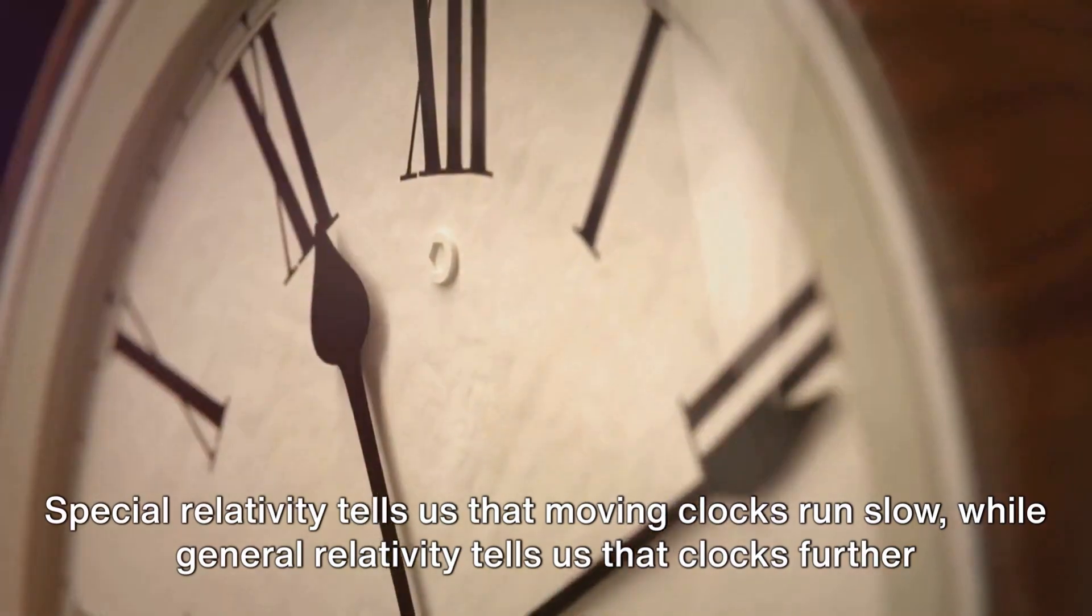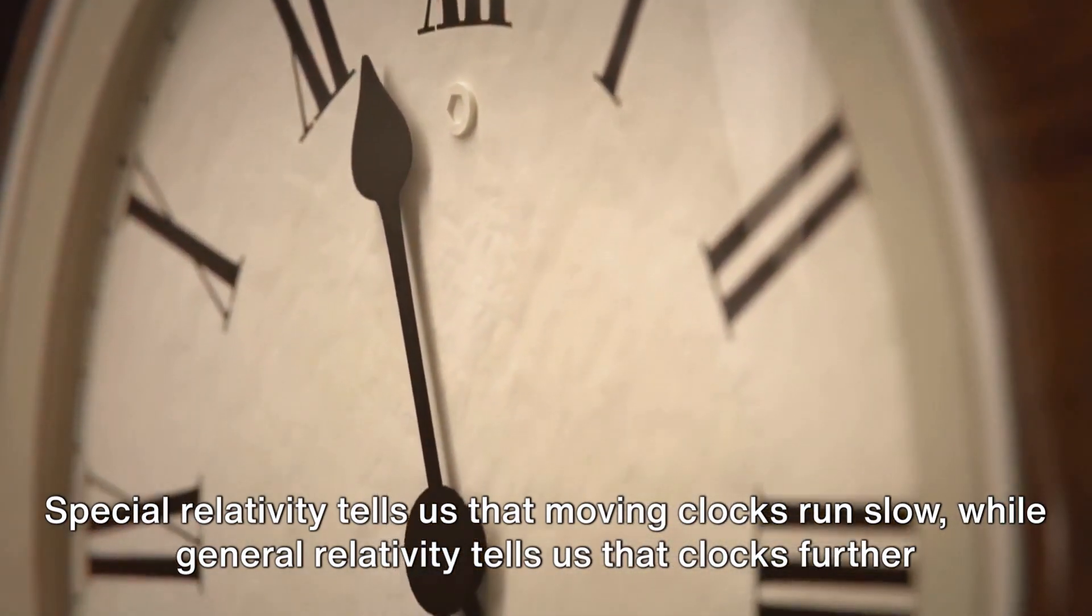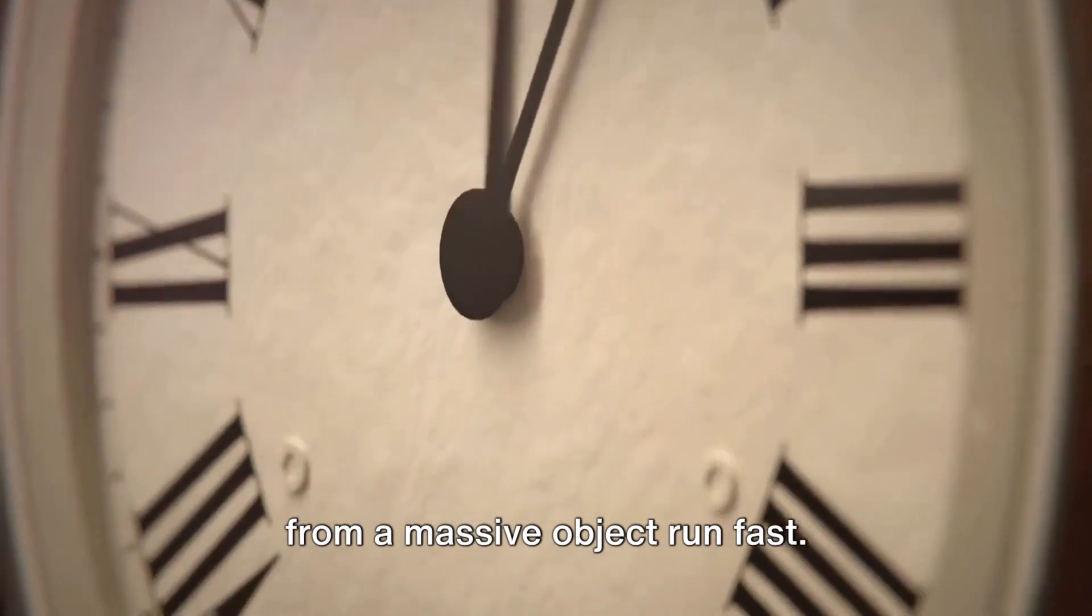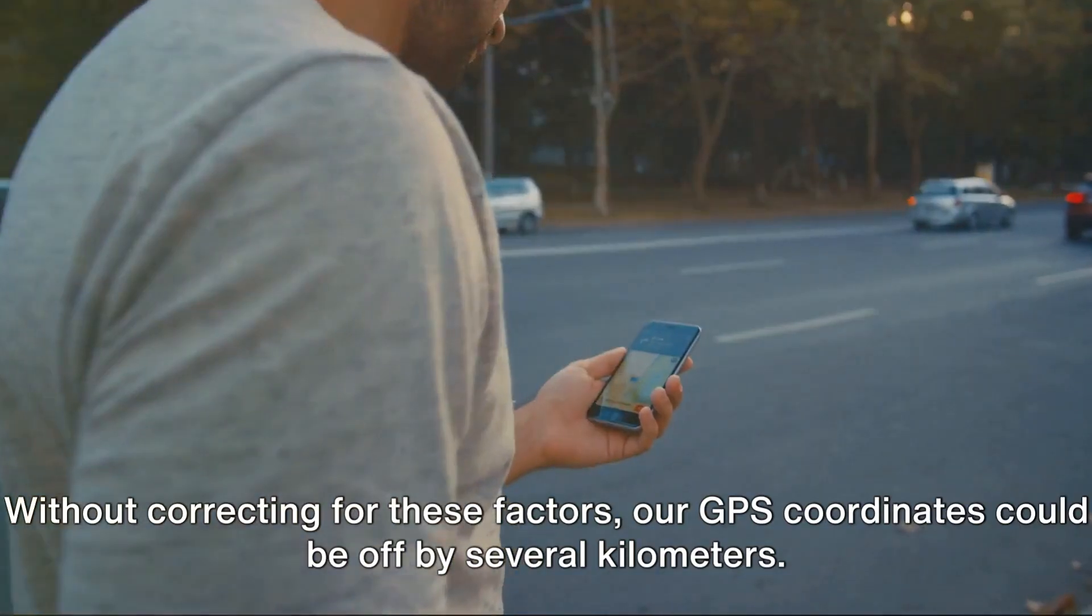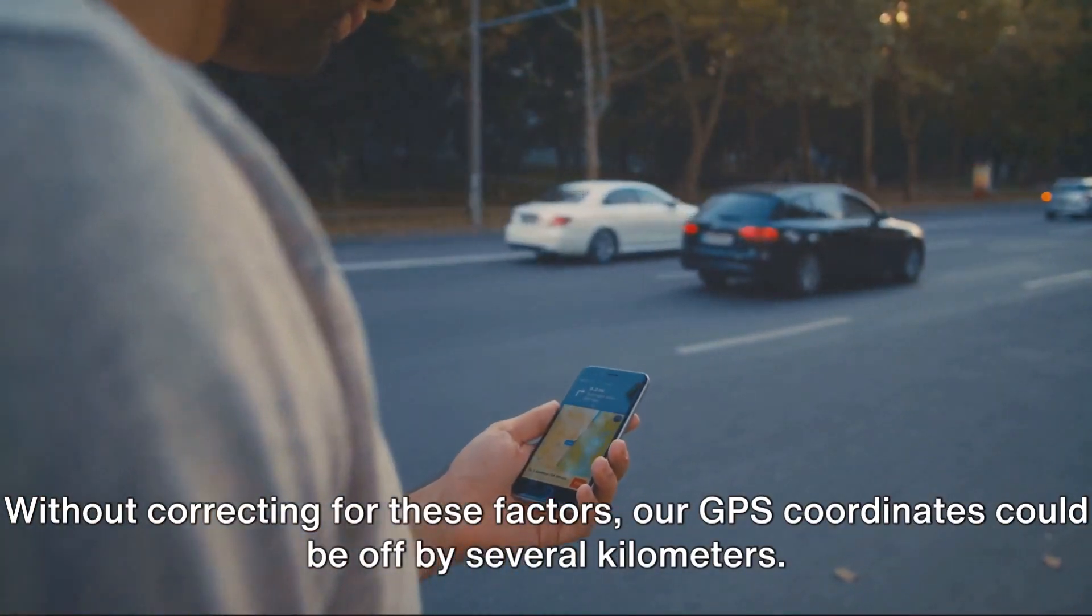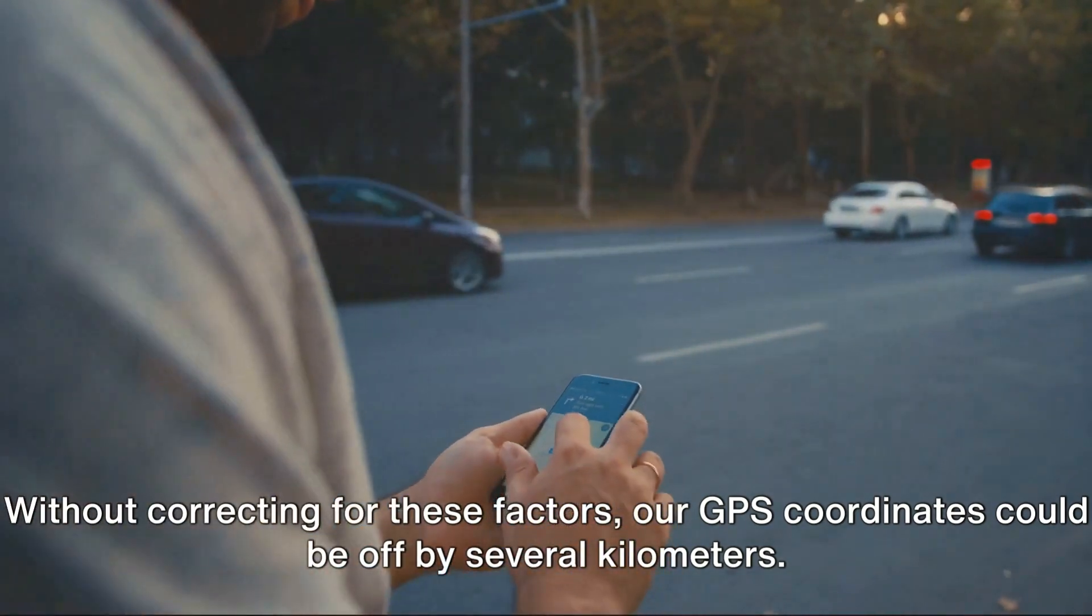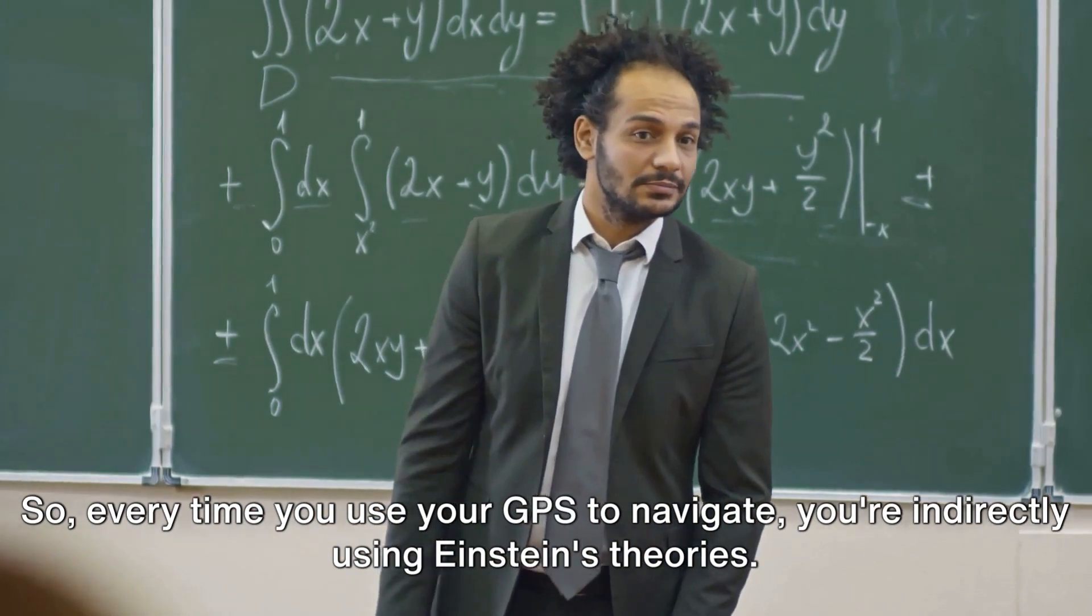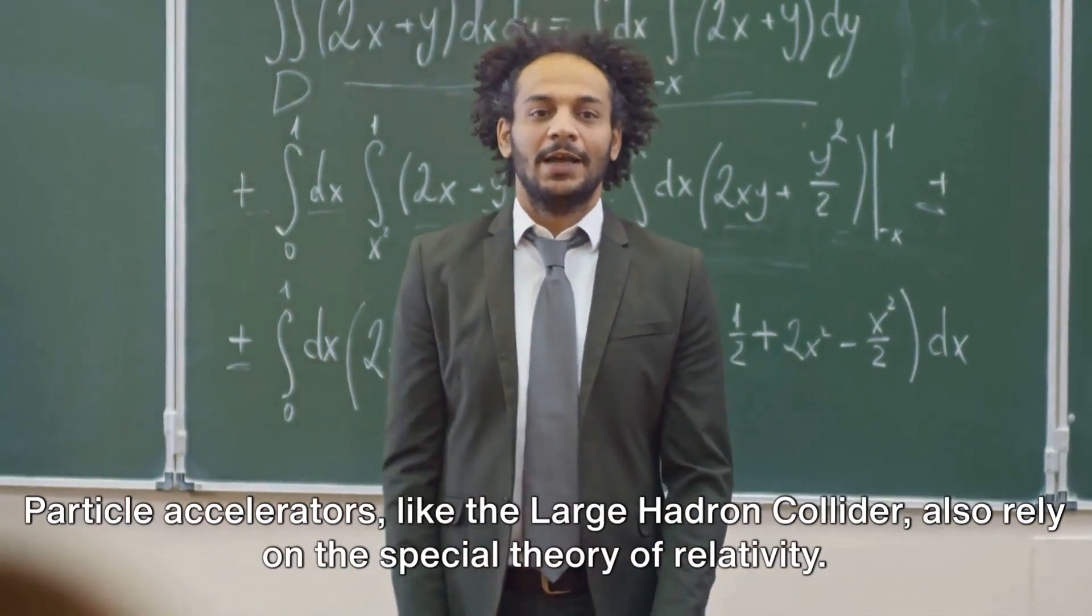Special relativity tells us that moving clocks run slow, while general relativity tells us that clocks further from a massive object run fast. Without correcting for these factors, our GPS coordinates could be off by several kilometers. So, every time you use your GPS to navigate, you're indirectly using Einstein's theories.